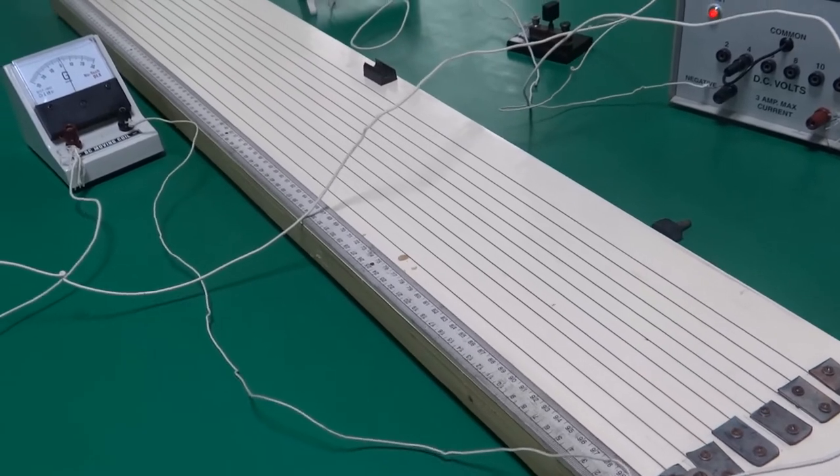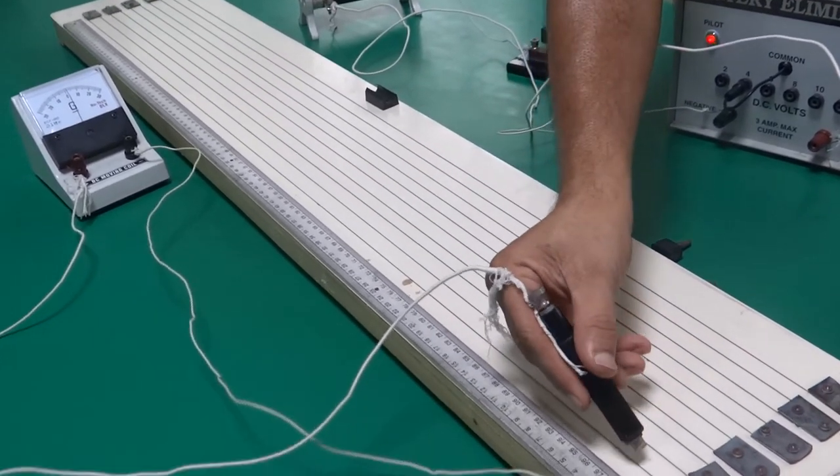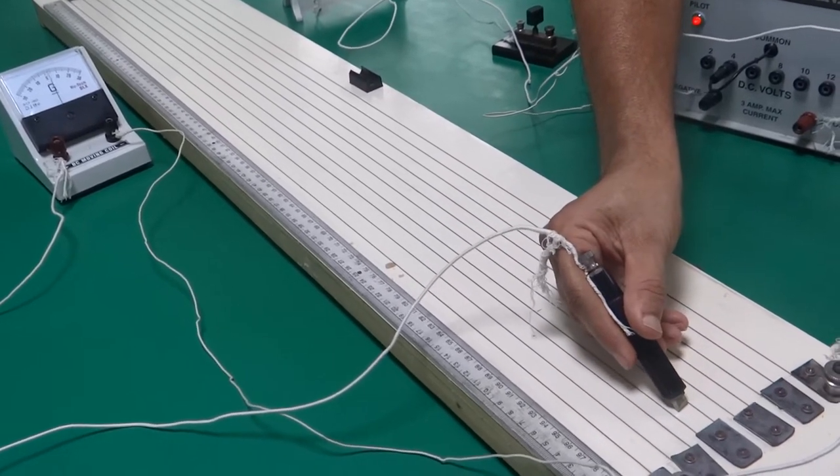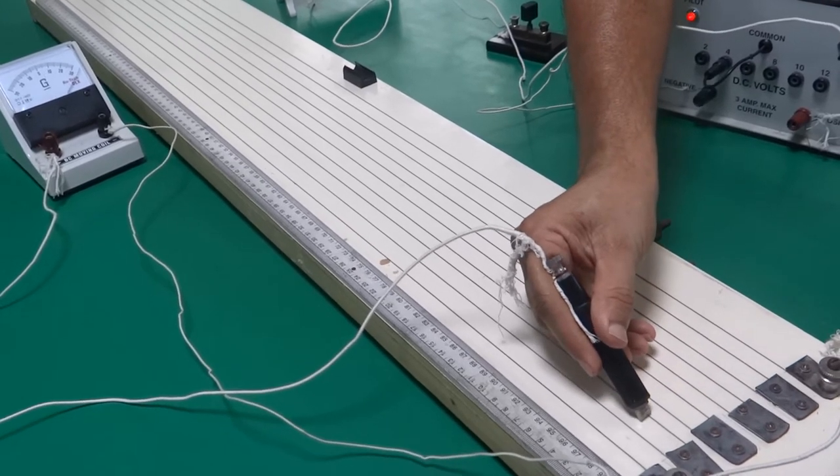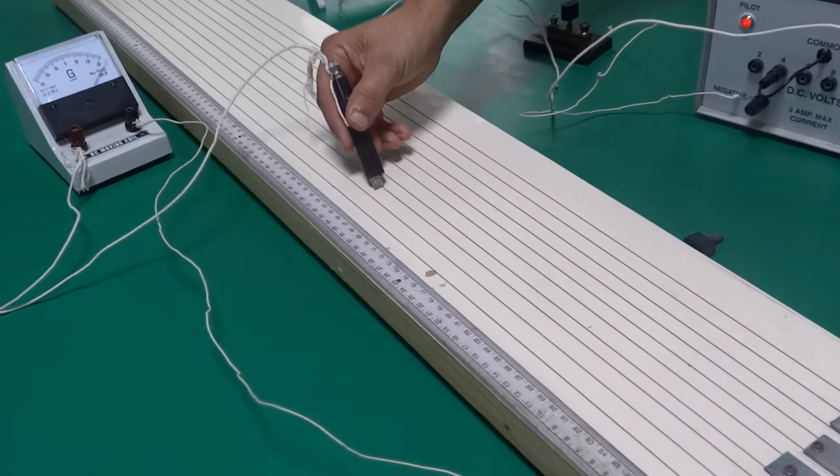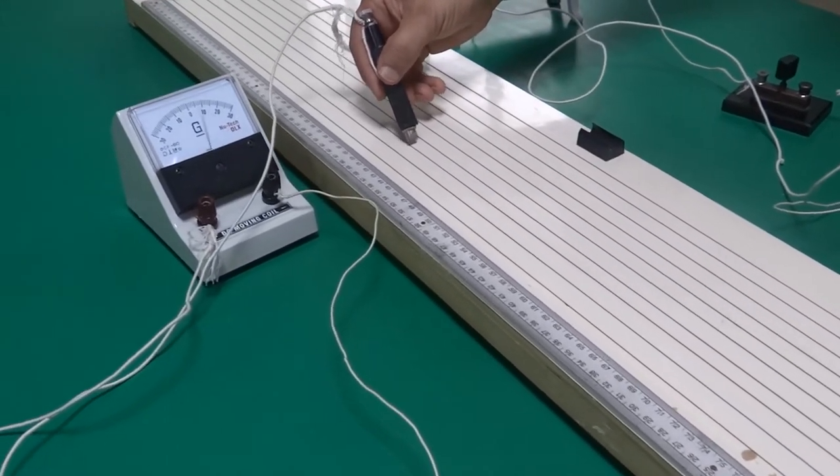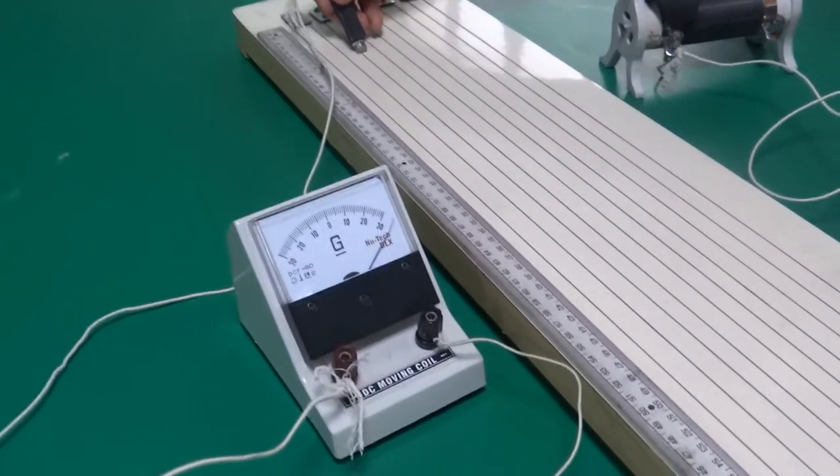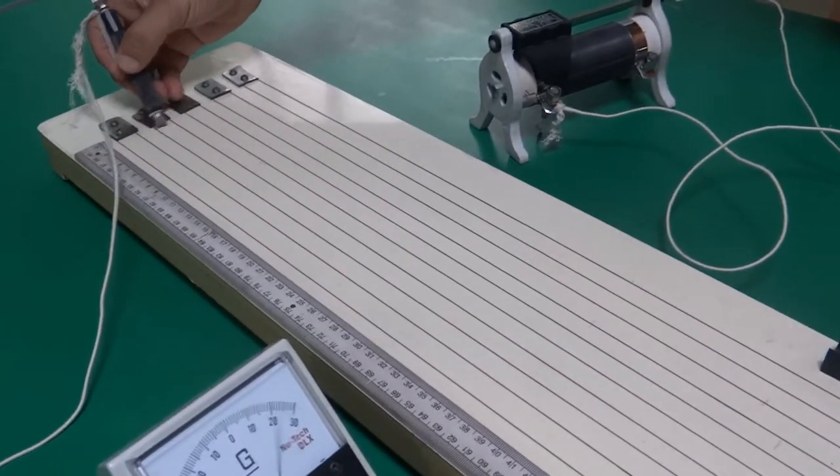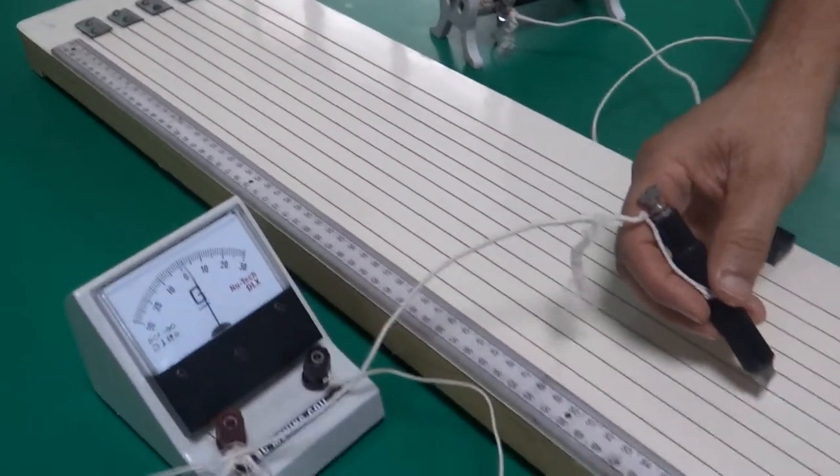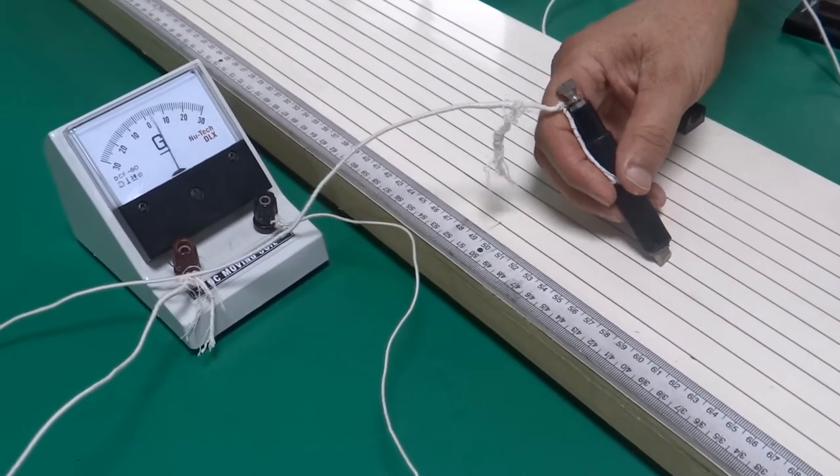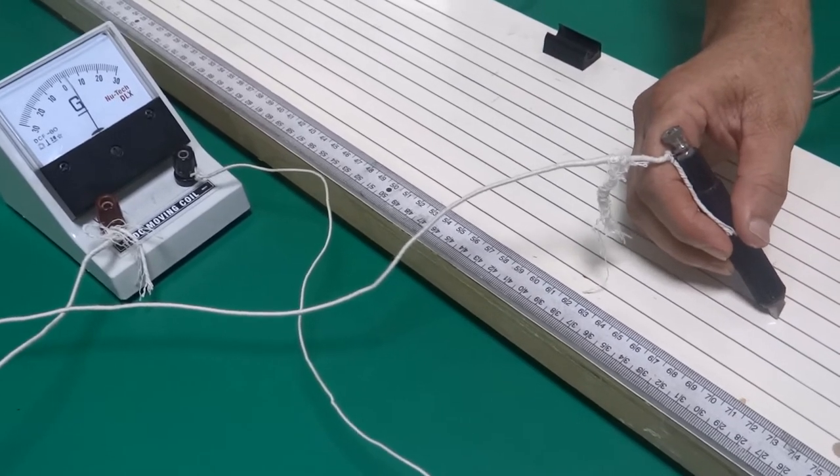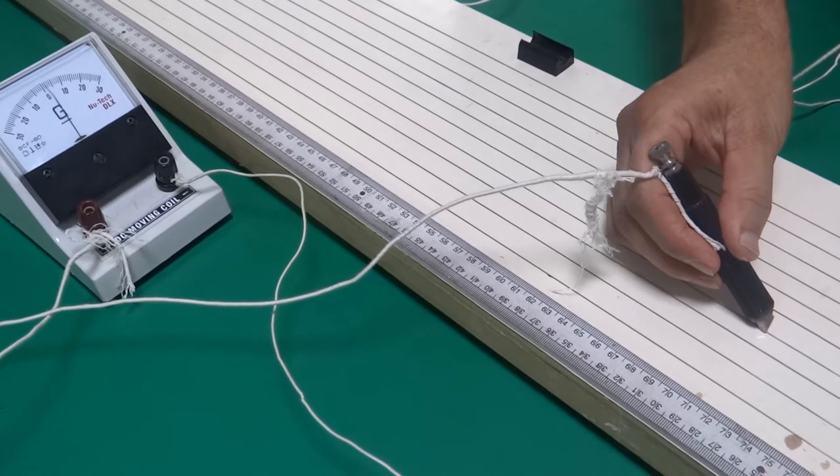So first find null point for the main source. We find out null point. Here it is right, here it is left. Here I check left. Here it is right. So it must be somewhere here. Let's go to this wire and find it out. Coming closer to the zero. So it must be somewhere here. This is the null point.